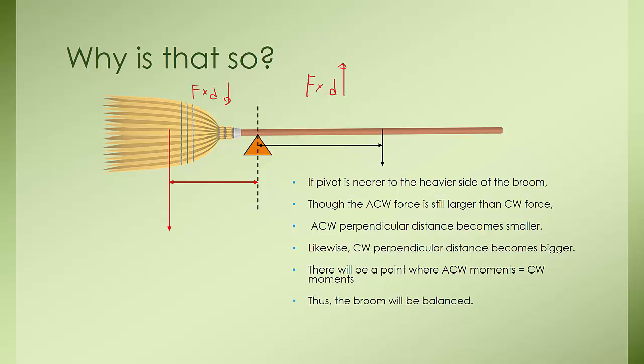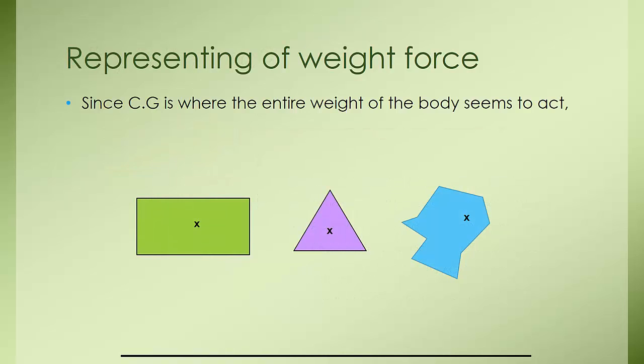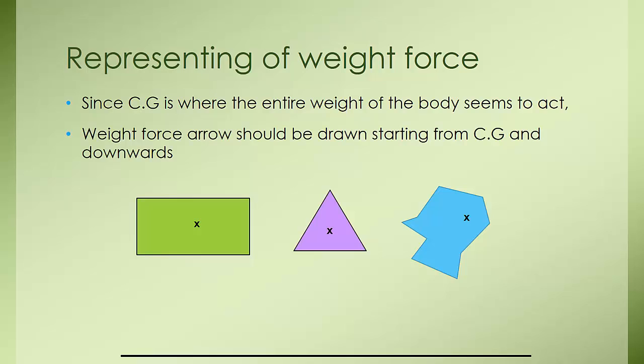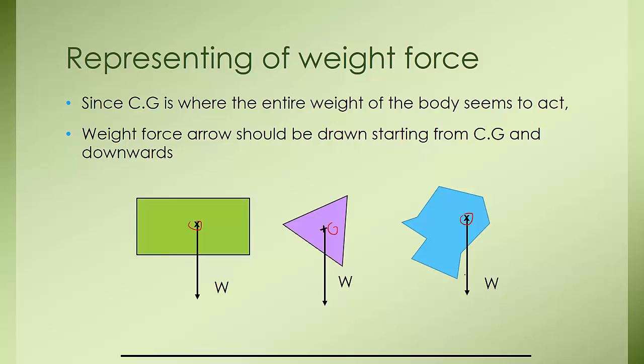How do you represent weight force in general? Since CG is the point where the entire weight of the body seems to act, the weight force should be drawn as an arrow starting from the CG and pointing downwards. If the CG is marked as X, you just draw the weight force straight down from that point. Even if you rotate the object, the CG follows the object and the weight still points straight down. For an irregular object, if you know where the CG is, draw the weight going down from that point — do not draw it at the geometric center of the shape, as that would be incorrect.